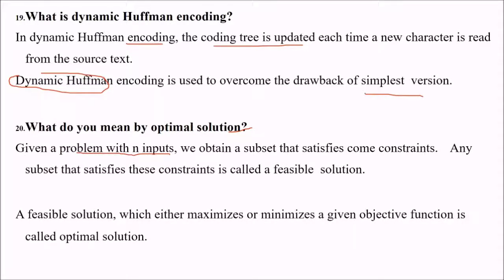What is meant by optimal solution? If you have a problem with n inputs, we obtain a subset that satisfies some constraints. Any subset that satisfies these constraints are called feasible solutions. A feasible solution which either maximizes or minimizes a given objective function is called optimal solution.